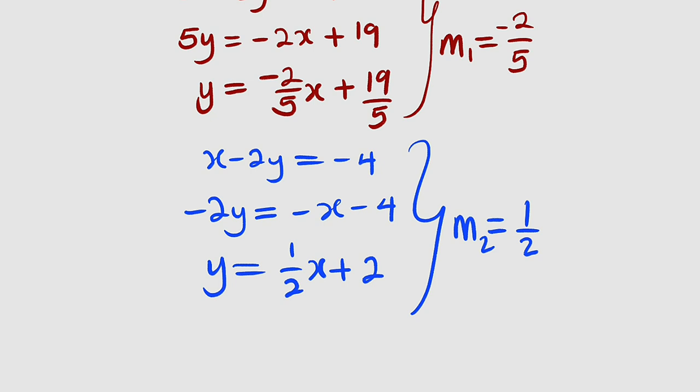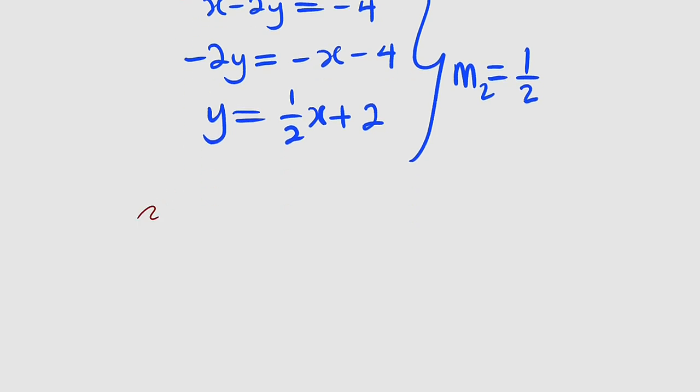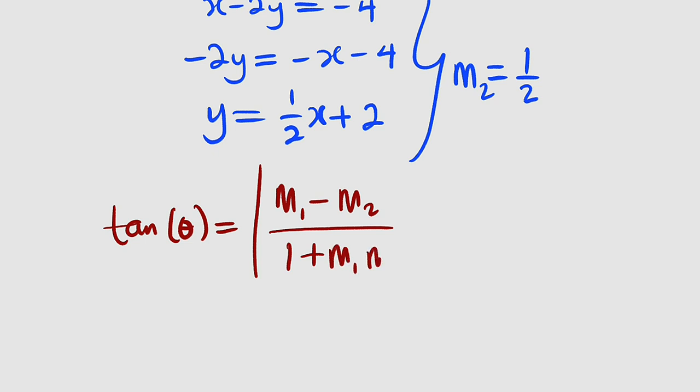So what is our formula? Our formula is tangent of that angle we are looking for is equal to the absolute value of m1 minus m2 divided by 1 plus m1 times m2. All we have to do is to substitute and find our angle.